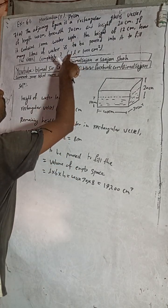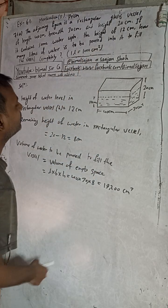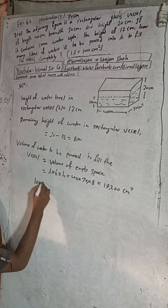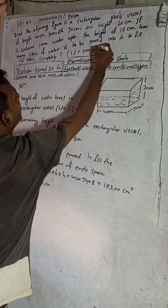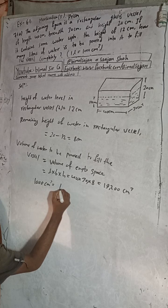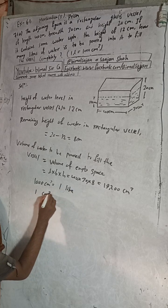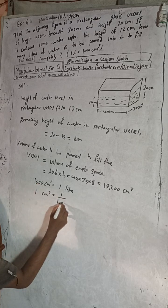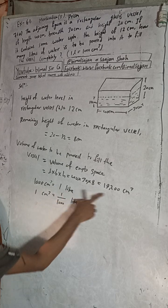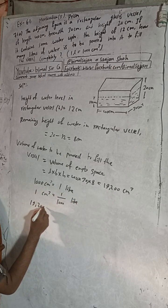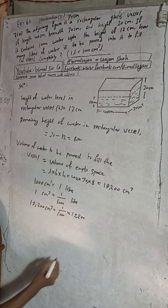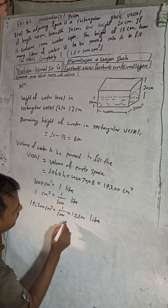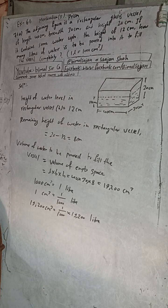Now, as given, 1000 cm³ is equal to 1 liter. So 1 cm³ is equal to 1/1000 liter. In place of 1 cm³, we put 9600 cm³, which equals 1/1000 × 9600 liters.